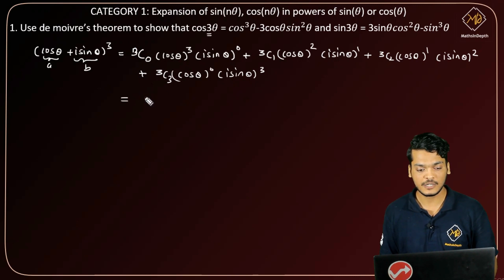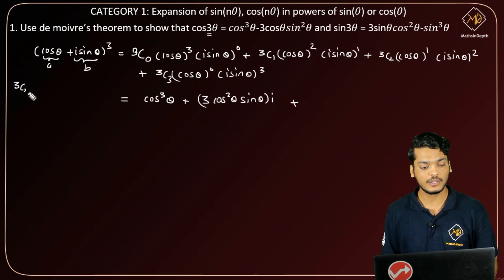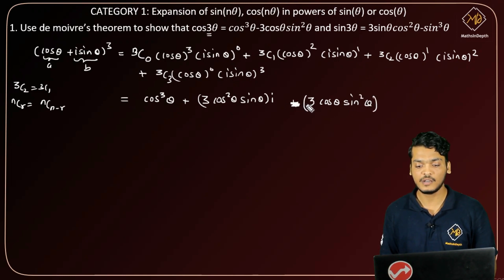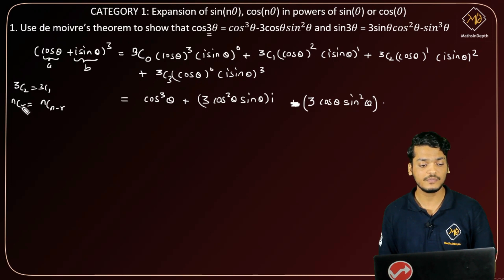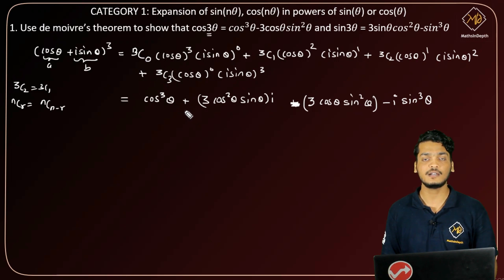Evaluating each term: 3C0 = 1, so the first term is cos³θ. The second term: 3C1 = 3, giving 3cos²θ·sinθ·i. The third term: 3C2 = 3 (using nCr = nC(n-r)), giving 3cosθ·sin²θ·i² = 3cosθ·sin²θ·(-1) = -3cosθ·sin²θ. The fourth term: 3C3 = 1, and i³ = -i, so this gives -i·sin³θ.